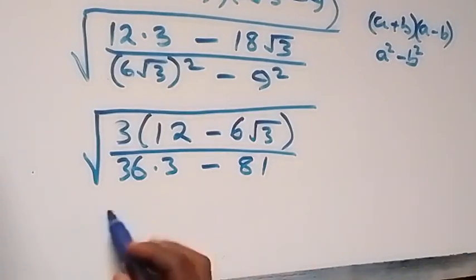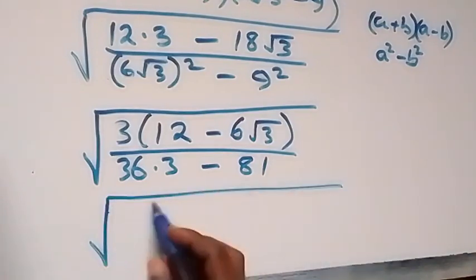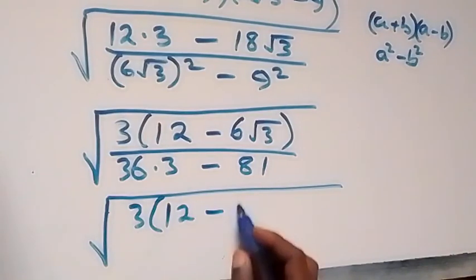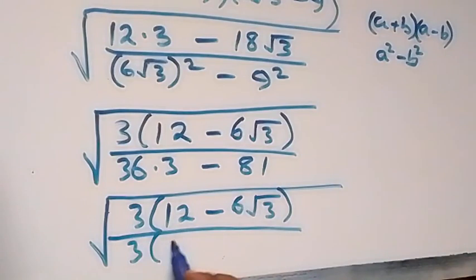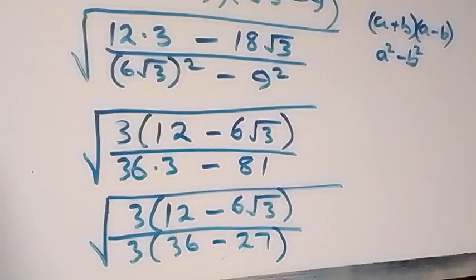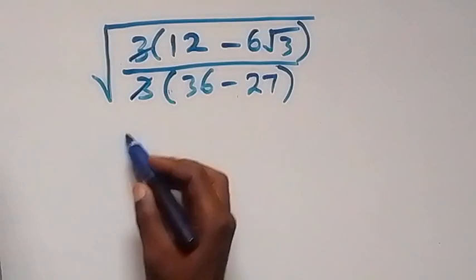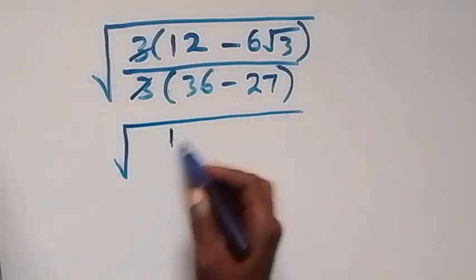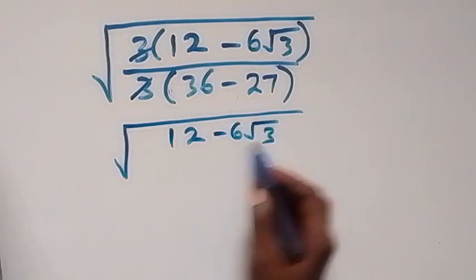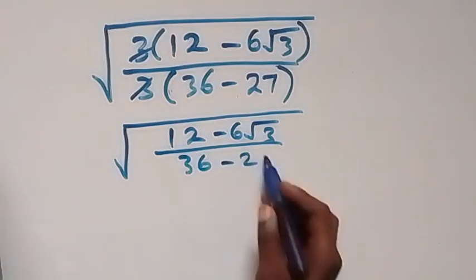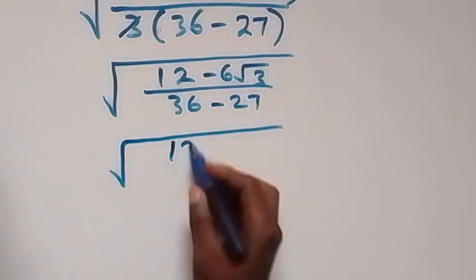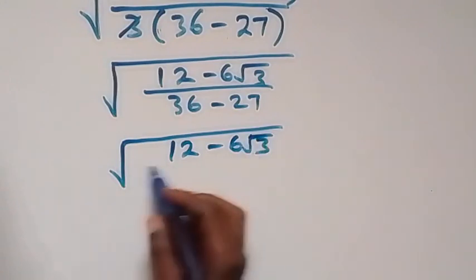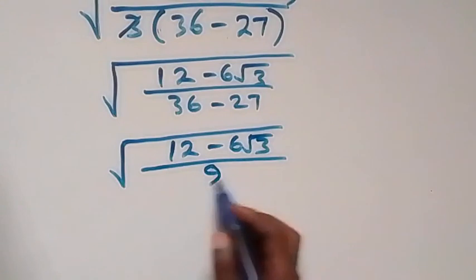We can factor 3 out of both numerator and denominator. Factoring gives square root of 3(12 − 6√3) divided by 3(36 − 27). Here the 3s cancel each other, and we are left with square root of (12 − 6√3) divided by (36 − 27) = 9.